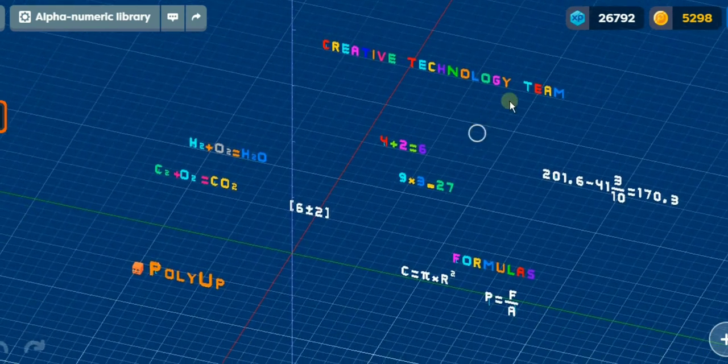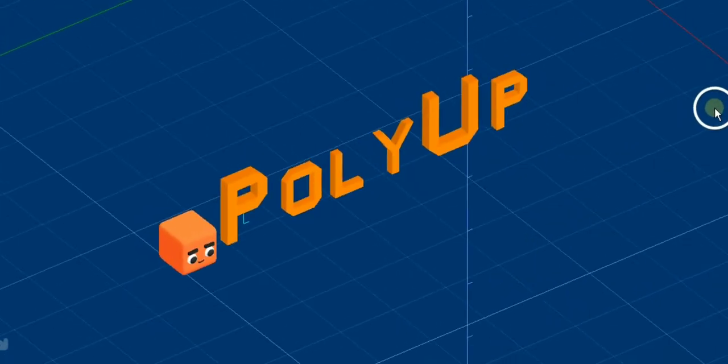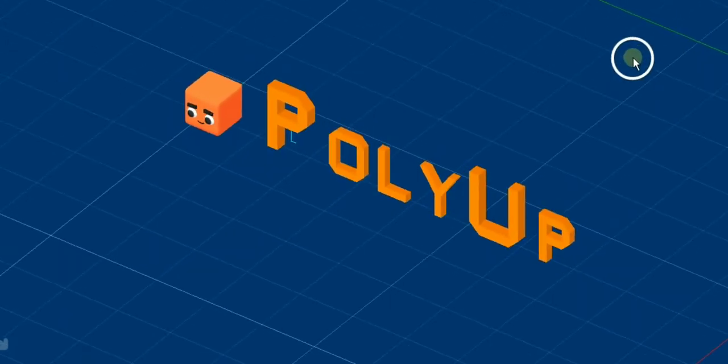First of all, I want to show the word Polyapp. As you can see, it does not change when you rotate it because through anchors you connect the letters to each other.